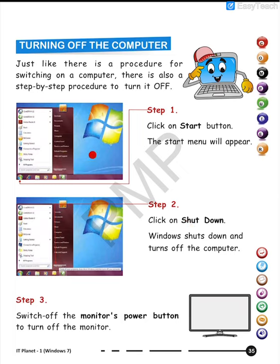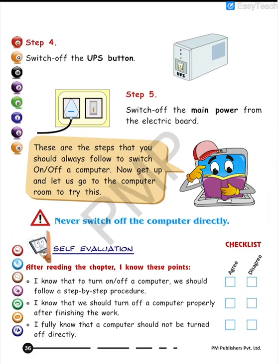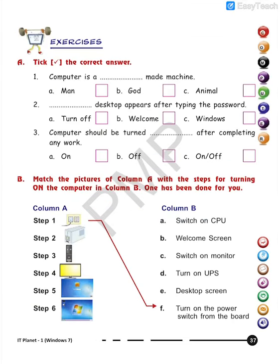Once the monitor is off, you will switch off the UPS, and then finally switch off the main power. So: click Start, click Shutdown, switch off the monitor, switch off the UPS, and switch off the main power. Now let us discuss the exercise questions.